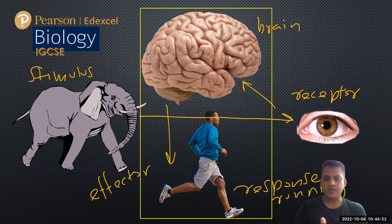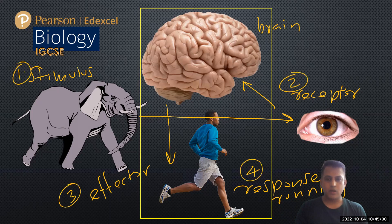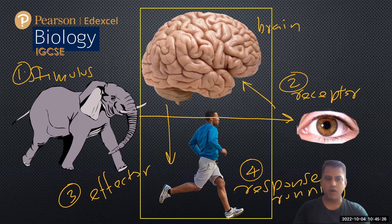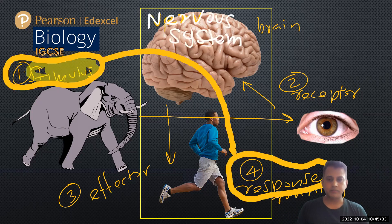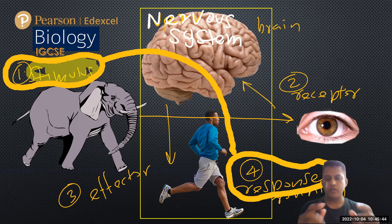Finally, we can see the response — the man is running; that is the response. The four components are: stimulus, receptors, effectors, and response. The brain coordinates from stimulus to response — from component one, stimulus, to component four, response.